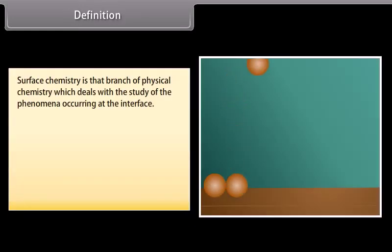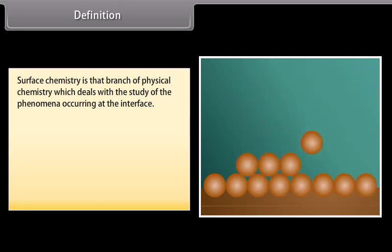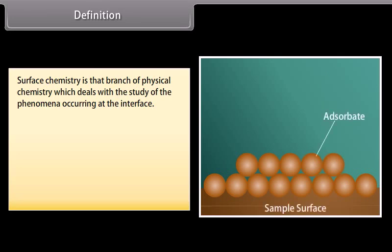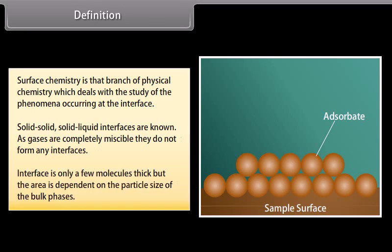Surface chemistry is that branch of physical chemistry which deals with the study of phenomena occurring at the interface, that is, the boundary separating two bulk phases. Solid-solid and solid-liquid interfaces are known examples. As gases are completely miscible, they do not form any interfaces. The interface is only a few molecules thick, but the area depends on the particle size of the bulk phases.